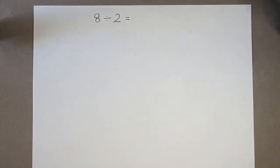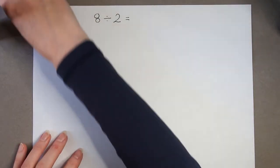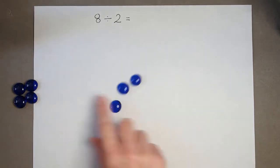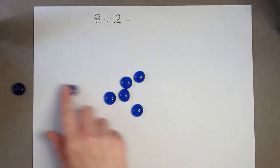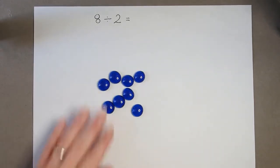So I'm going to use counters first of all. I need to have 8 counters. So 1, 2, 3, 4, 5, 6, 7, 8. I've got 8 counters.